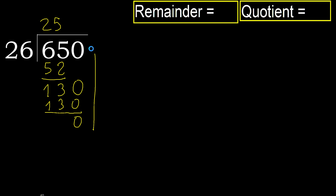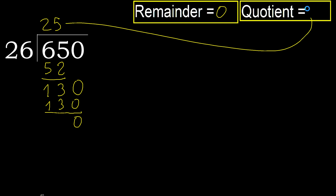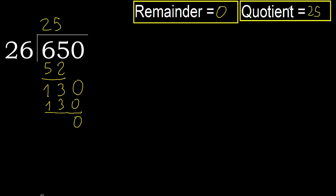Next — there is no number, therefore finish. 650 divided by 26 is 25.